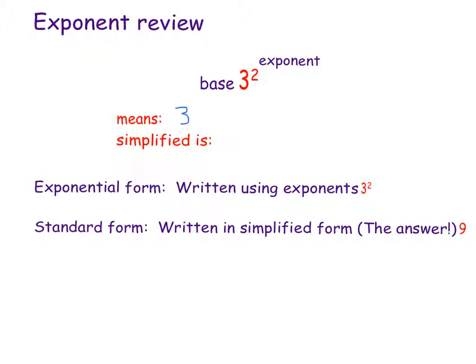So remember what this means. 3 squared means 3 times 3, and it's simplified as 9. The base tells us what the factor is, and the exponent tells us how many. So if you had 4 to the 3rd, it means 4 times 4, which is 16, times 4, which is 64. Keep that in mind when you are evaluating your expressions today.